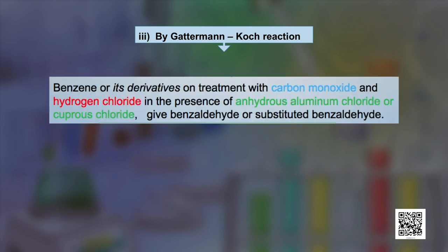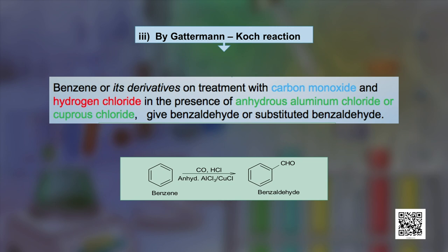The fourth approach is the Gattermann-Koch reaction, in which benzene or its derivatives are treated with carbon monoxide and hydrogen chloride in the presence of anhydrous aluminum chloride or cuprous chloride to give benzaldehyde or the substituted benzaldehyde.